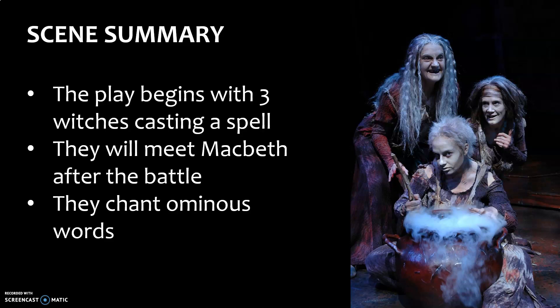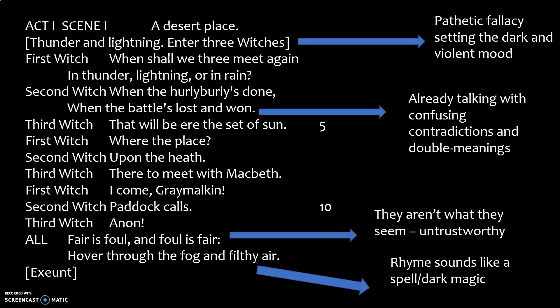So what happens in this scene? This is Act 1, Scene 1. It's the very beginning of the play. It starts off with three witches casting a spell. They say how they're going to meet Macbeth after the battle, which we haven't really found out about yet, and they chant some ominous words before they leave the stage. It's a very short scene, but an important one. At the very top there, it says it should be a deserted place, and there is thunder and lightning. Look at how that is pathetic fallacy instantly starting off the play, setting this dark and violent mood up.